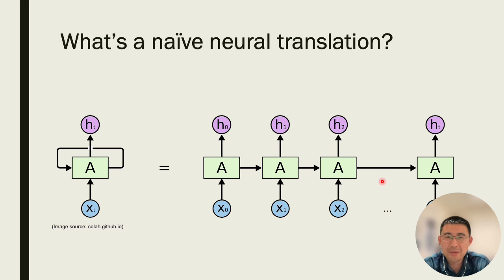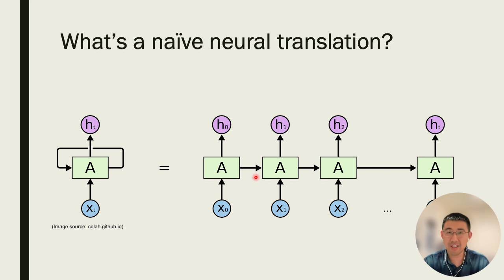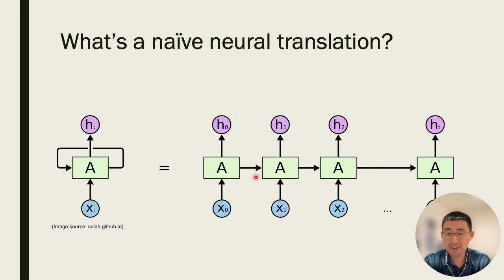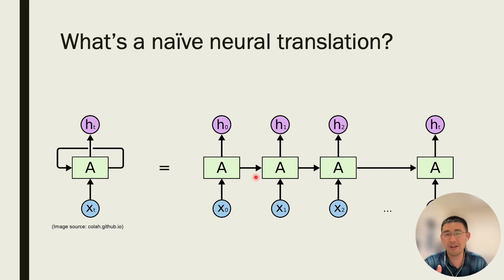Another problem we need to think about is that this recurrent neural network is notorious for something called vanishing gradient. The reason is we have the block running in serial many, many times, and during backpropagation the gradient multiplies many times. When many numbers smaller than one multiply each other, they can easily go to zero — almost zeroed out. We lose the gradient, and therefore we can't train the model. If values are bigger than one, they explode, but we can clip the gradient. Vanishing is the main problem.